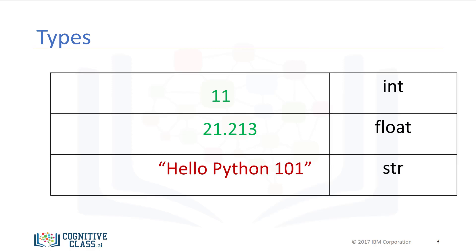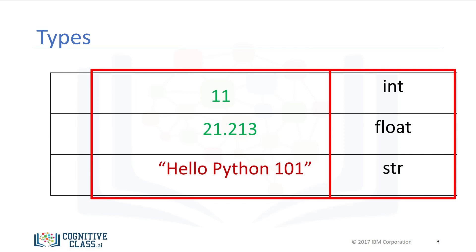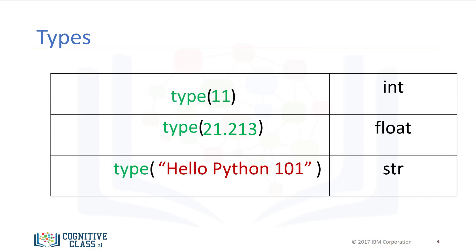The following chart summarizes three data types for the last examples. The first column indicates the expression. The second column indicates the data type. We can see the actual data type in Python by using the type command.